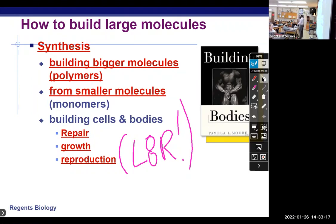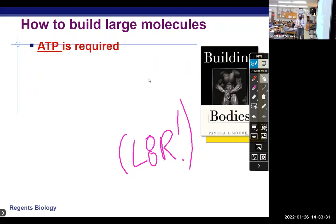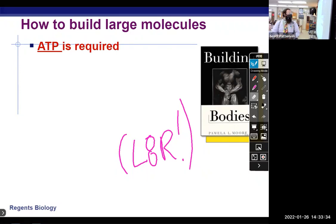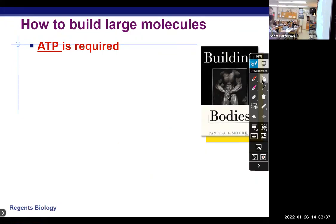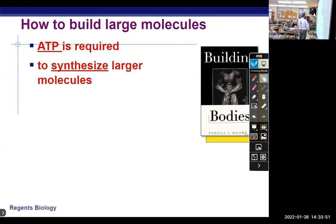Remember what substance is required by your cells to do this building? It's ATP. ATP is required to make larger polymers. ATP is required to synthesize larger molecules. Final blanks. Are you ready? No one's leaving until we're done.